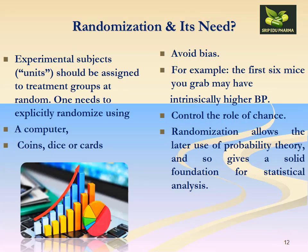Experimental subjects or units should be assigned to treatment groups at random. One needs to explicitly randomize using a computer, coins, dice or cards. Randomization helps to avoid biasness — for example, the first six mice you grab may have intrinsically higher blood pressure. It also allows the later use of probability theory, giving a solid foundation for statistical analysis.